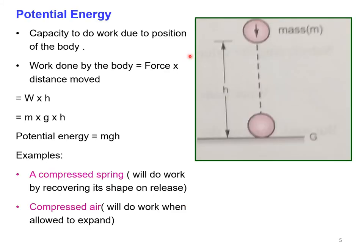Potential energy is the capacity to do work due to the position of the body. For a body of mass m raised by height h, the work done is force times distance: the weight W equals mg, so potential energy equals mgh. Best examples of potential energy are a compressed spring — when released it does work and recovers its shape — and compressed air, which does work when released.